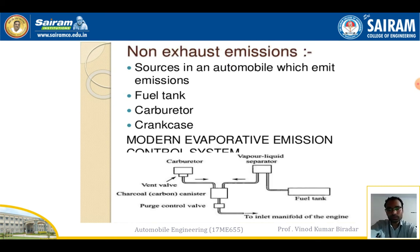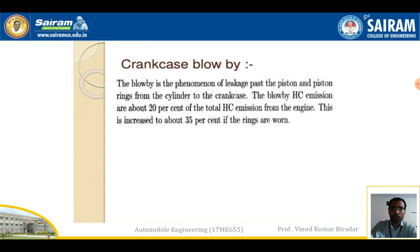Non-exhaust emission: sources in the automobile that emit emissions include the fuel tank, carburetor, and crankcase. These come under non-exhaust emission. Crankcase blow-by is the phenomenon of leakage past the piston and piston rings from the cylinder to the crankcase. Due to high-pressure combustion, unburnt fuel gas remains near the piston and piston rings. Blow-by HC emissions are about 20% of total hydrocarbon emissions from the engine.